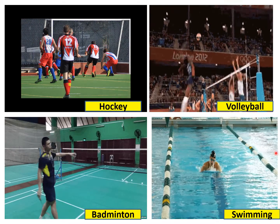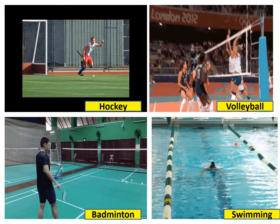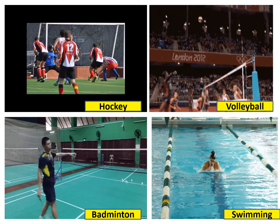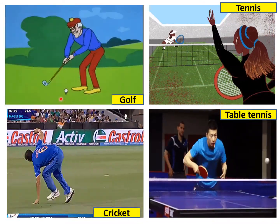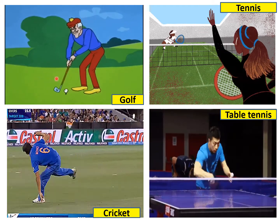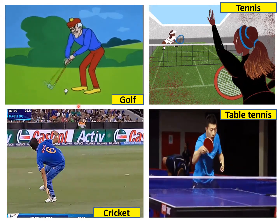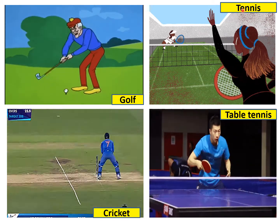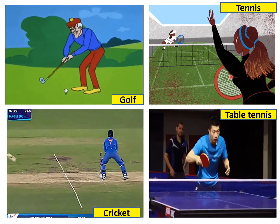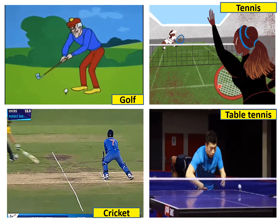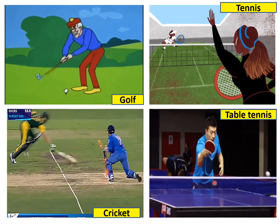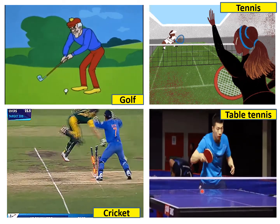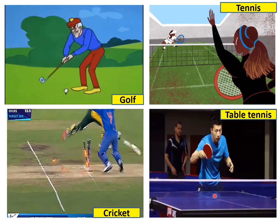Then swimming — you can see this girl swimming in water in a pool. Now this person is playing golf. Golf is played like this, with a ball kept on a stand. Then this is tennis — you can see this girl playing with a ball and racket. This is table tennis because there is a table on which the player plays with a small ball.